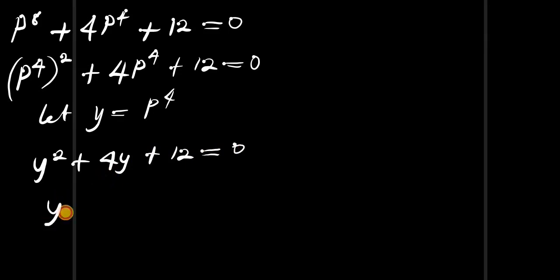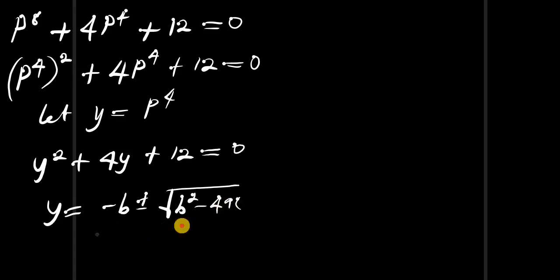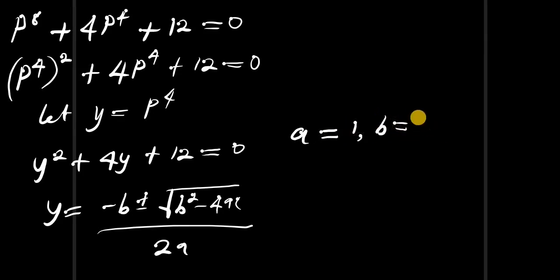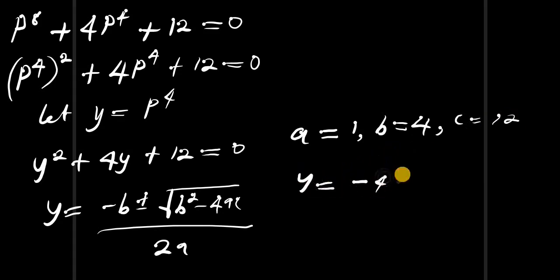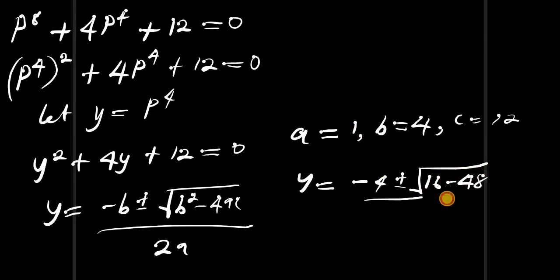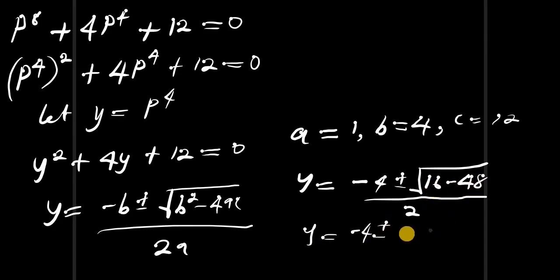This is a quadratic equation solved using the formula: y equals negative b plus or minus root of b squared minus 4ac, all divided by 2a. Here a equals 1, b equals 4, c equals 12. So y equals negative 4 plus or minus root of 16 minus 48, all divided by 2. Since 16 minus 48 is negative 32, we get root of negative 32, which introduces the imaginary number i.